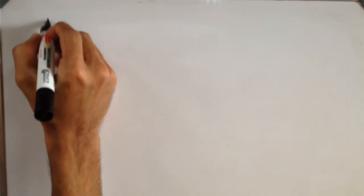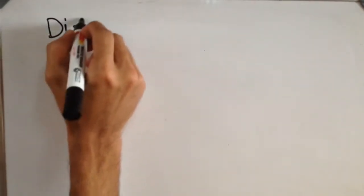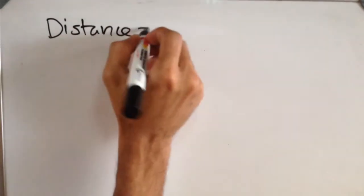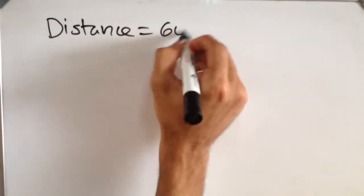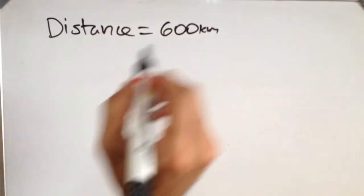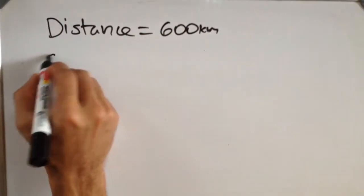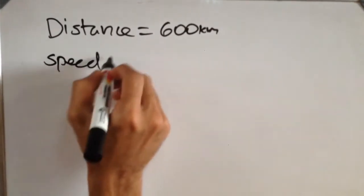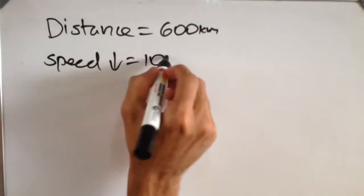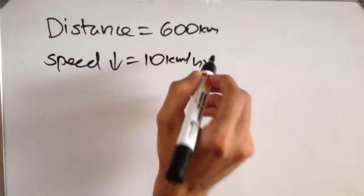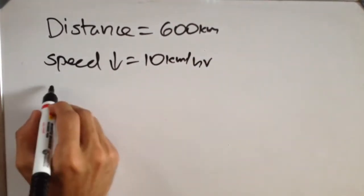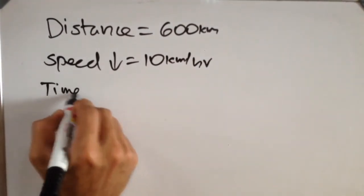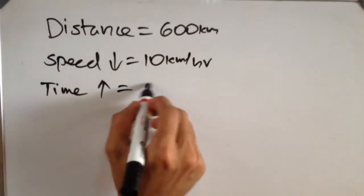In our question, we are given the distance as 600 kilometers, the decrease in speed equals 10 kilometers per hour, and the increase in duration is 2 hours.